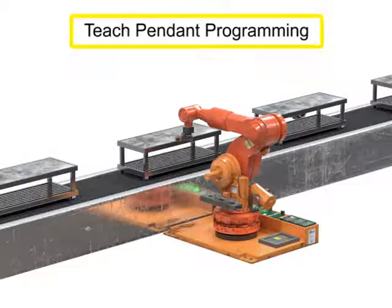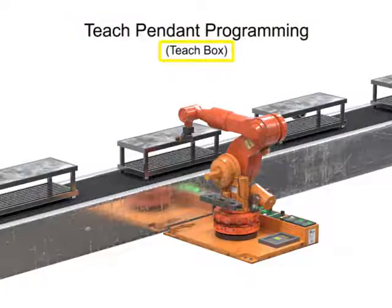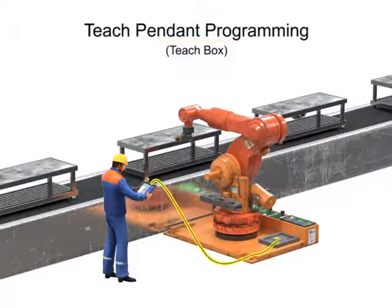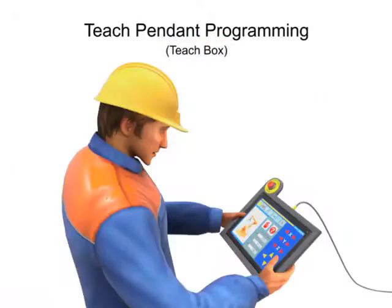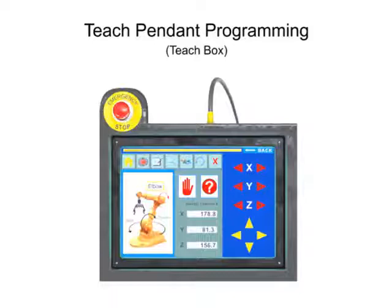A teach pendant, also called a teach box, is a handheld control and programming unit connected to the robot via a cable. Teach pendants can be touch screen, keyboard, joystick, or other computer interface. All typically have an emergency stop button since the robot is operating with the technician in the work envelope. More modern teach pendants can also be wireless.